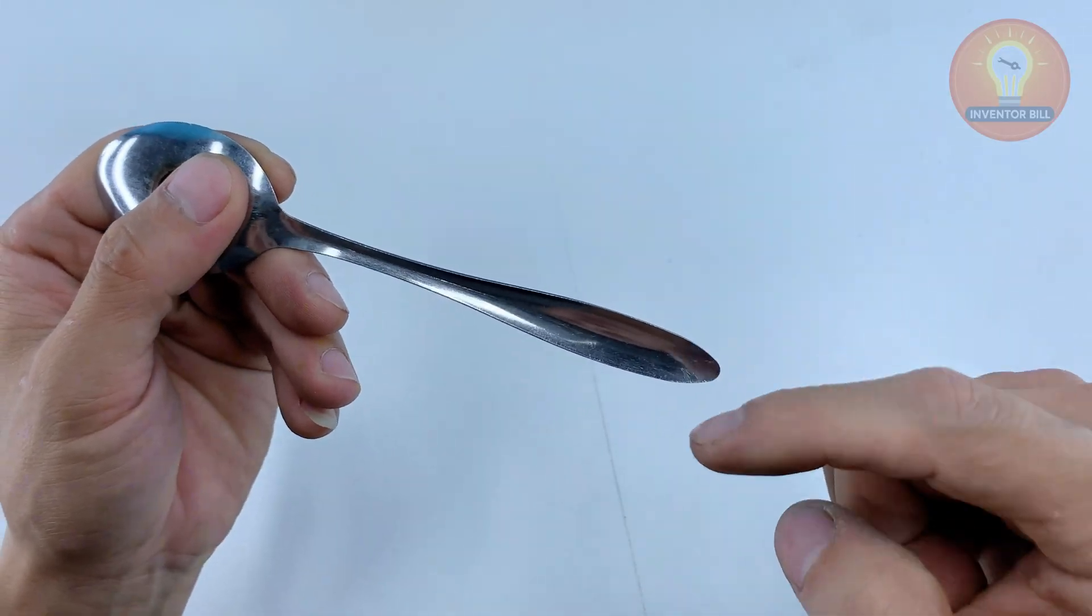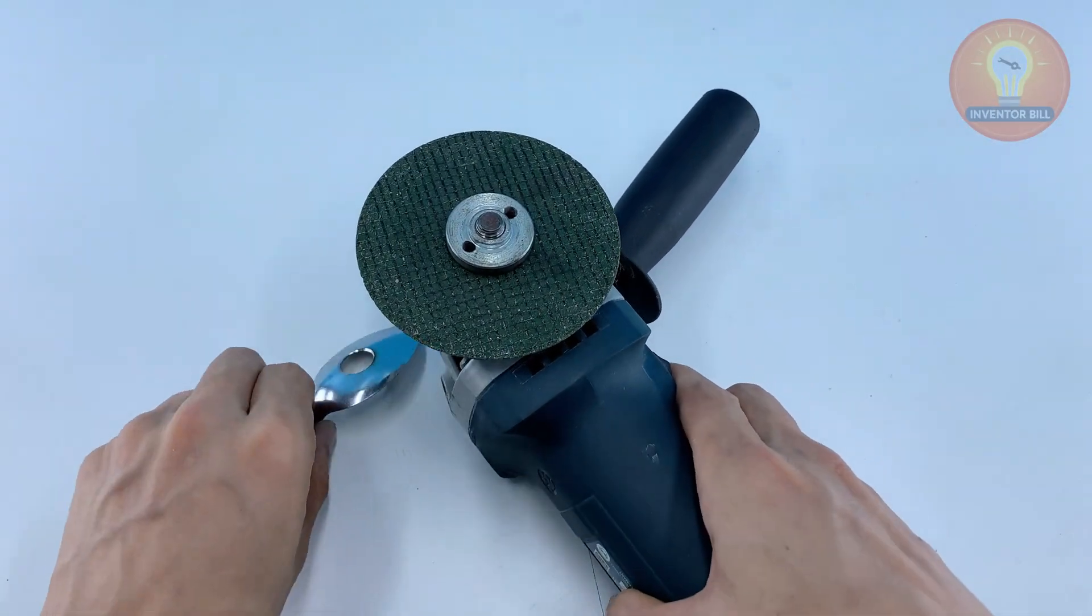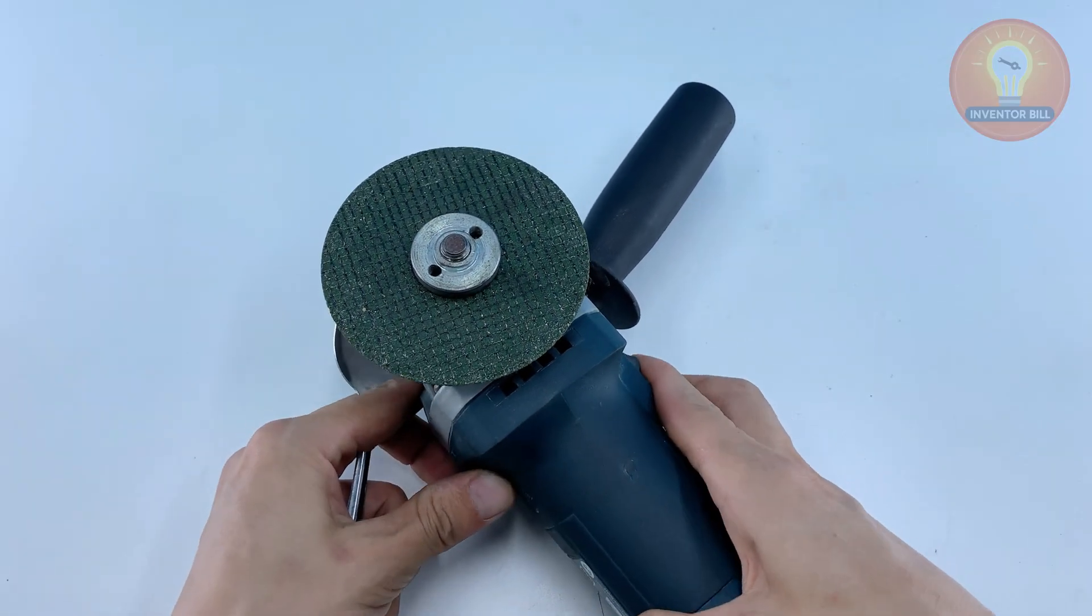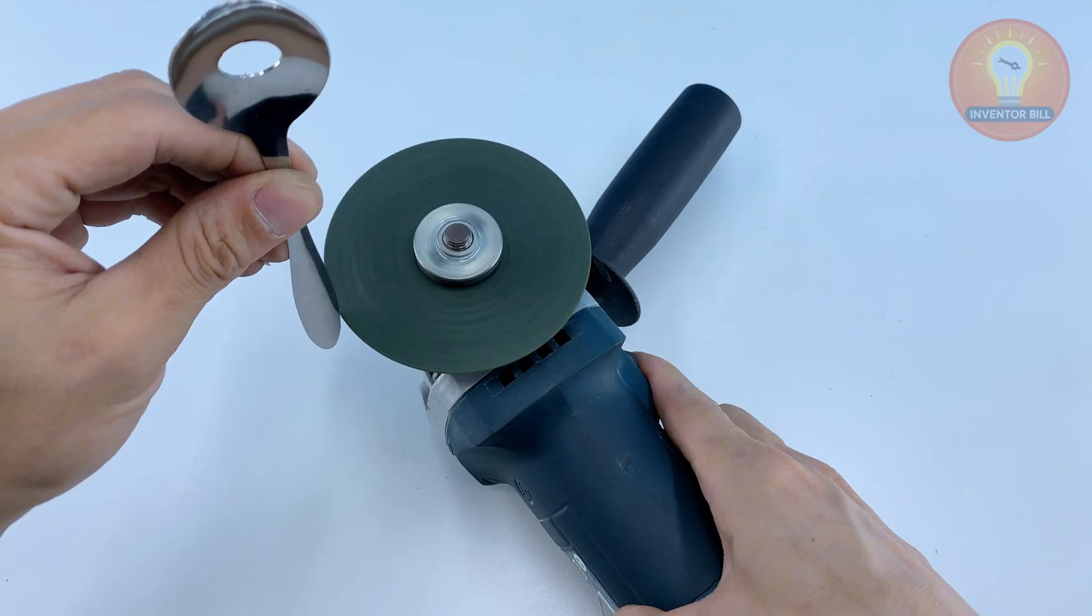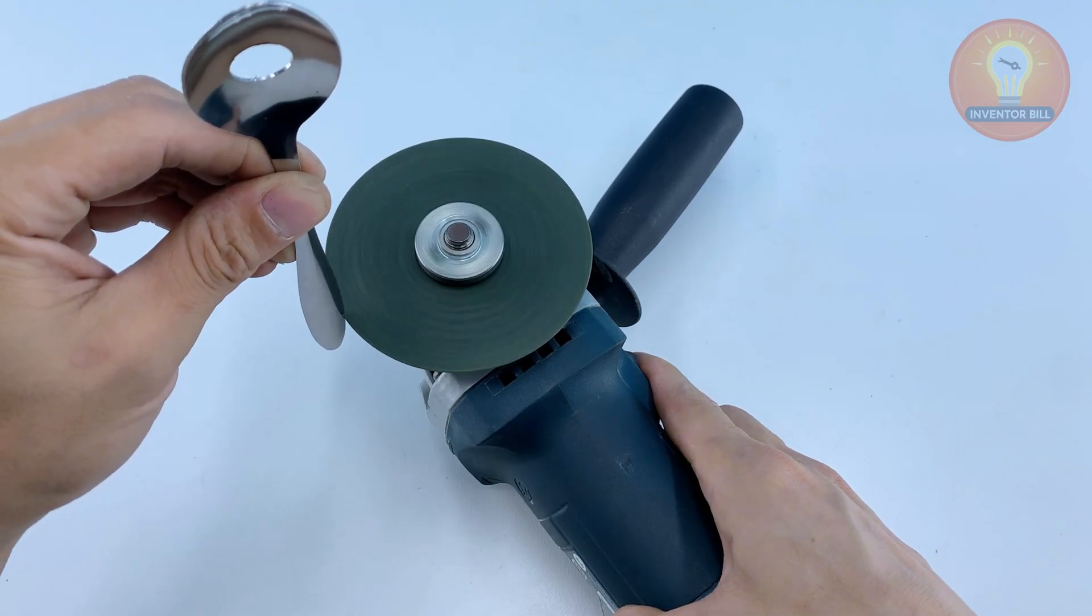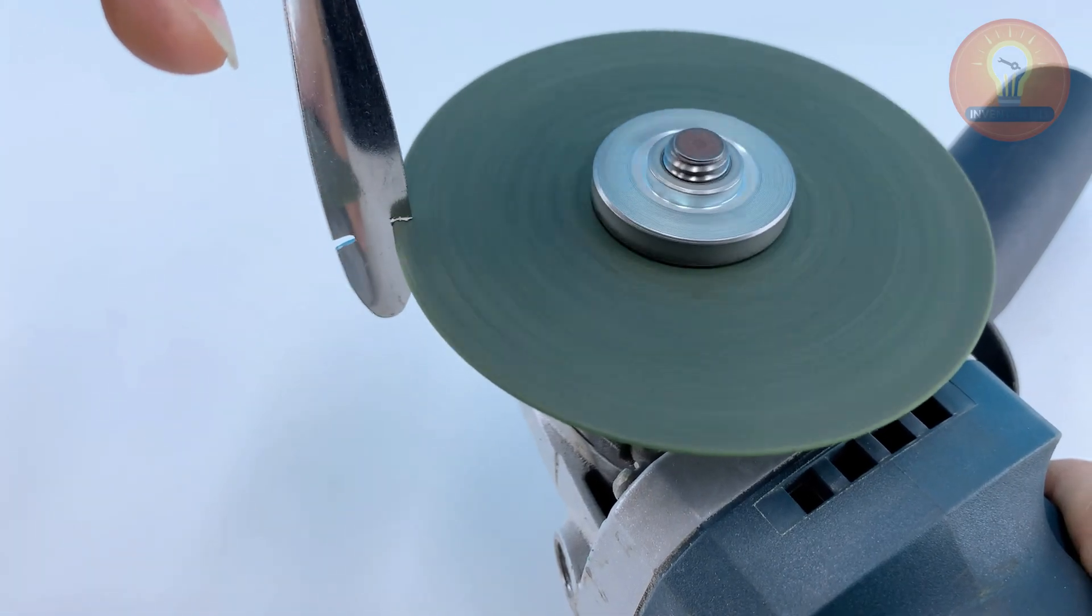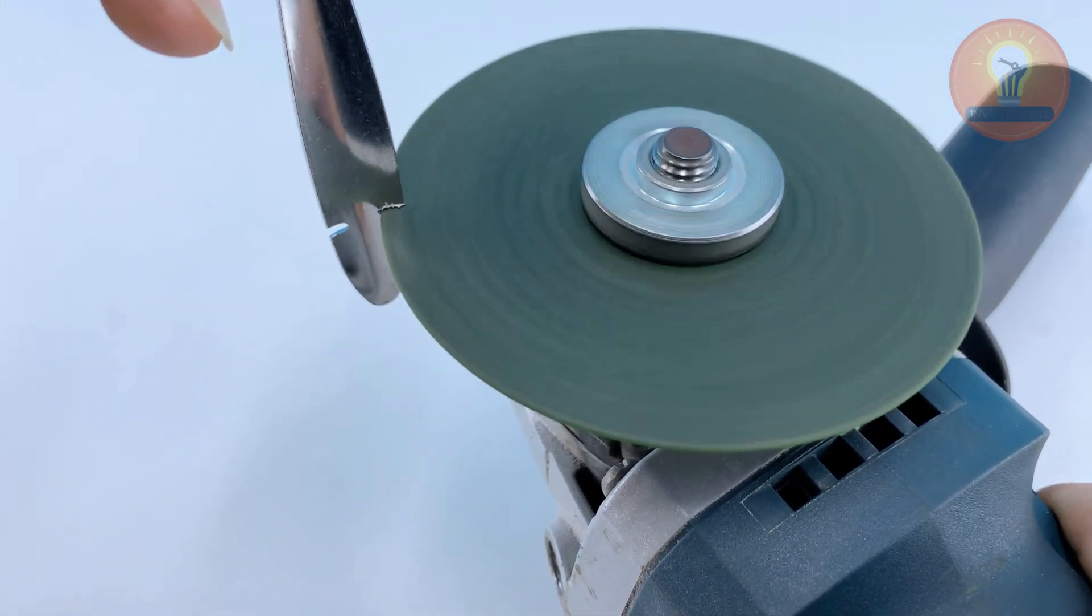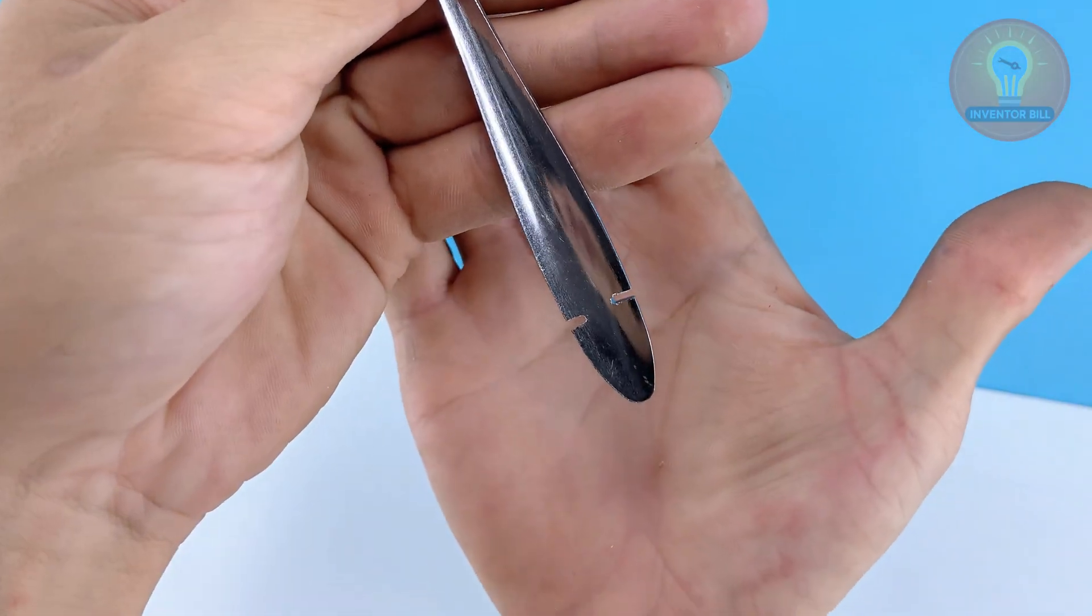When the hole is ready, bring the spoon out of the vise and move to the tail end. Use your cutting wheel to slice two small notches on opposite sides of the handle. These notches give you a solid grip point later when you tie in the copper wire.